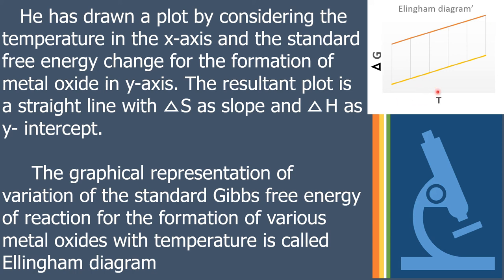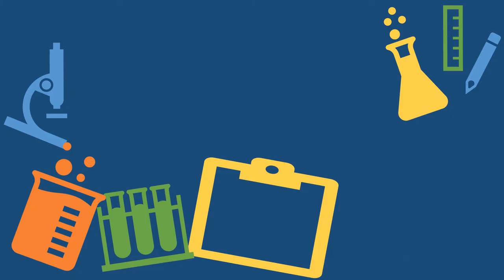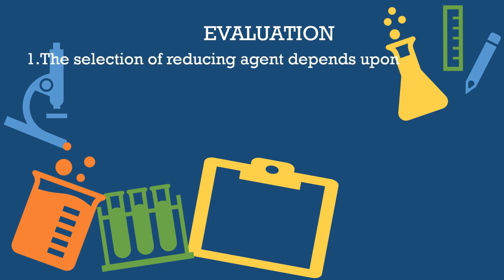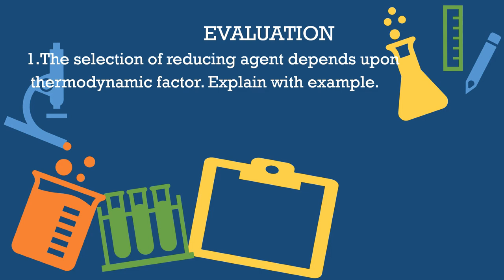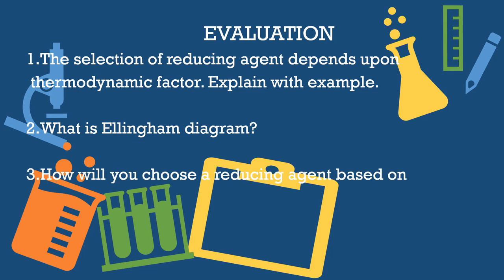Ellingham diagram is a graphical representation where ΔG is plotted on the y-axis and temperature on the x-axis. This diagram represents reactions for the formation of various metal oxides. The evaluation questions are: the selection of reducing agent depends upon thermodynamic factors — explain with example; what is the Ellingham diagram; and how will you choose a reducing agent based on thermodynamic principles? We will meet in the next class to discuss observations from the Ellingham diagram. Thanks for watching.